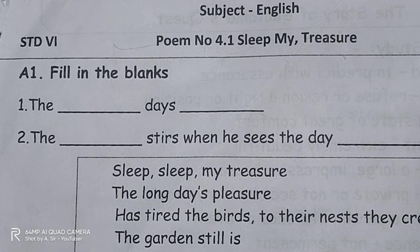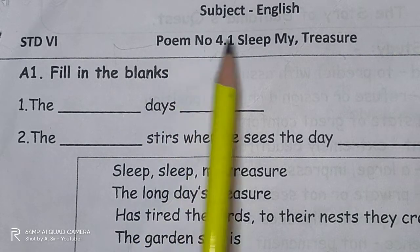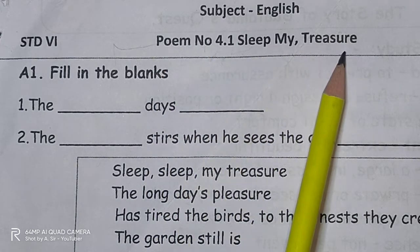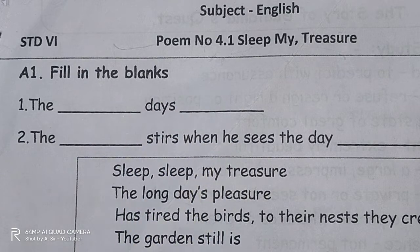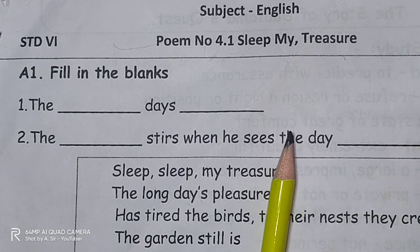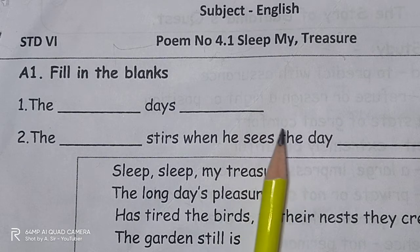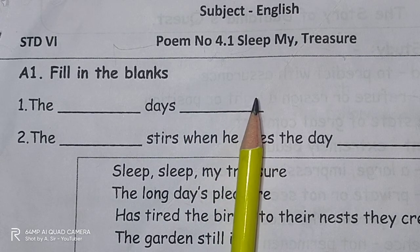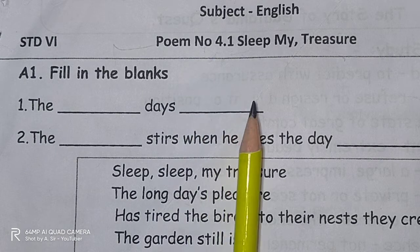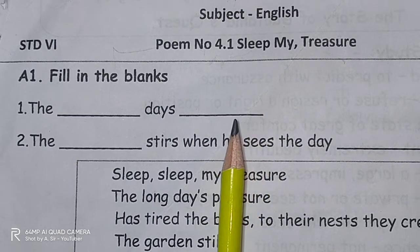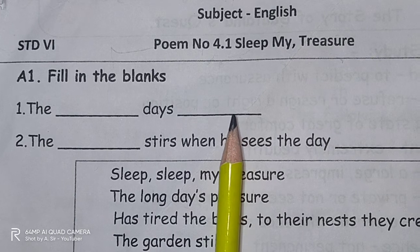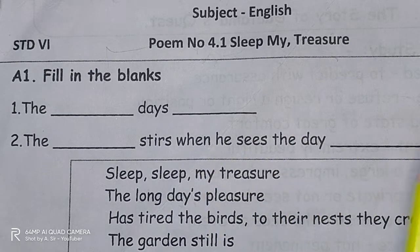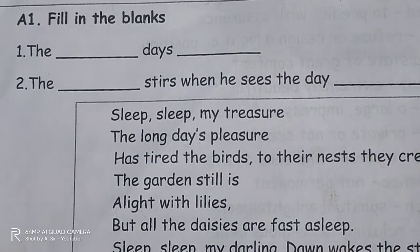Hello students, welcome back. Today we are doing 6th standard English, poem number 4.1 'Sleep My Treasure'. This is a poem for 6th standard English and today we will discuss the question answers. This is our notes. The meaning with explanation video is already uploaded on our YouTube channel — you can check our playlist. Without wasting time, let's get started.